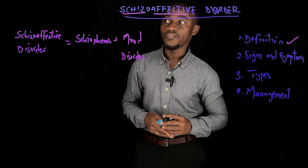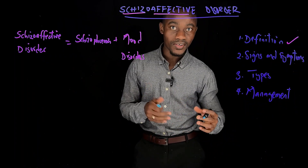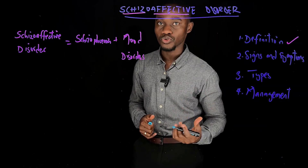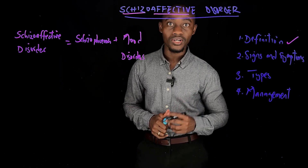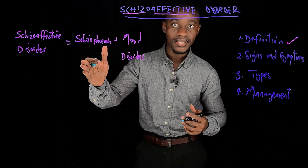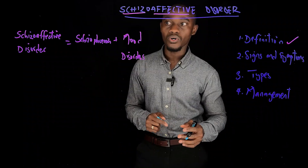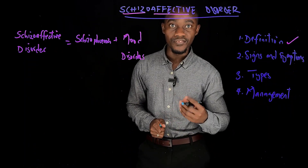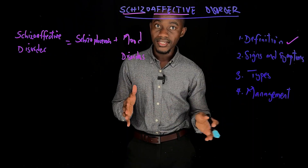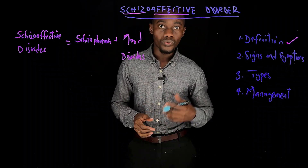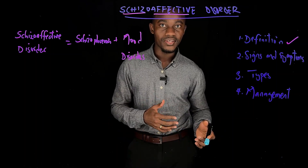Now that we understand the definition of schizoaffective disorder, let's move on to the signs and symptoms. The signs and symptoms are derived from both schizophrenia and mood disorders. An individual suffering from schizoaffective disorder would demonstrate signs and symptoms of schizophrenia such as hallucinations, delusions, disorganized behavior, and disorganized thinking.